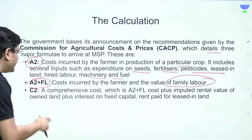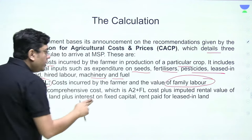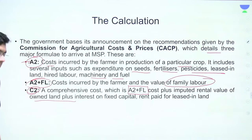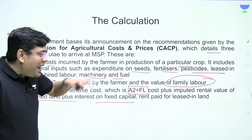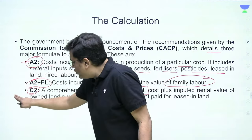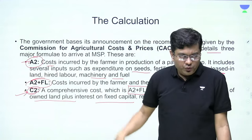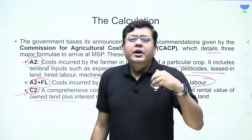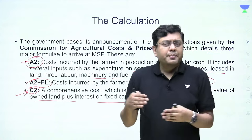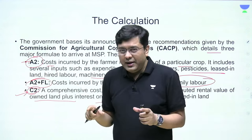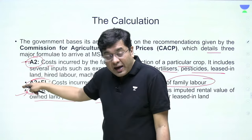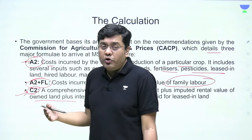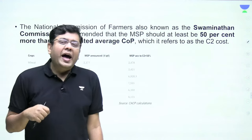C2 is arrived at by taking A2 plus FL, plus the rental value of owned land, plus interest on fixed capital and lease — the comprehensive land value. So to recap: A2 is farm input cost (seeds, machinery, tractor fuel, fertilizer, pesticide); FL is family labor; C2 is A2 plus FL plus rent on land plus interest on borrowed capital.